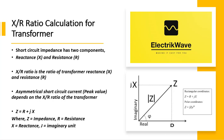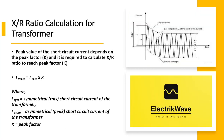Where Z equals impedance, R equals resistance, X equals reactance, and j equals imaginary unit. Peak value of the short circuit current depends on the peak factor K, and it is required to calculate X by R ratio to reach peak factor K. I_asymmetrical equals I_symmetrical multiplied by K.